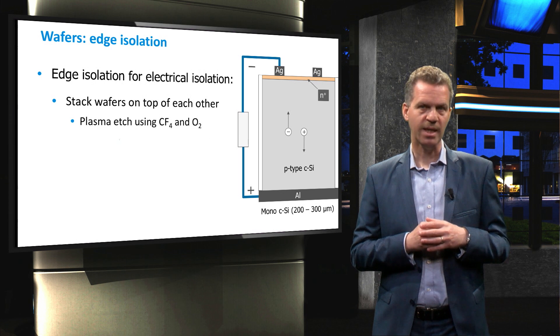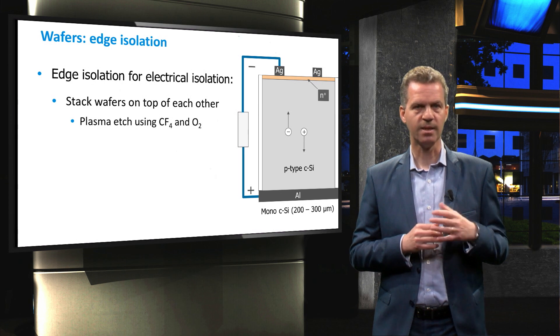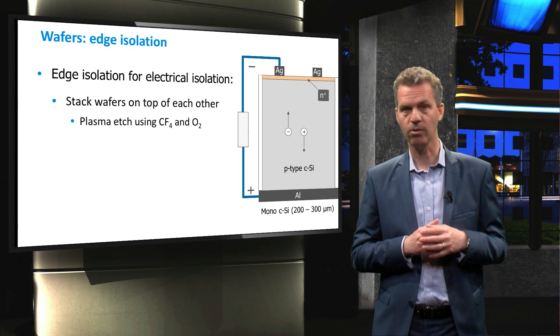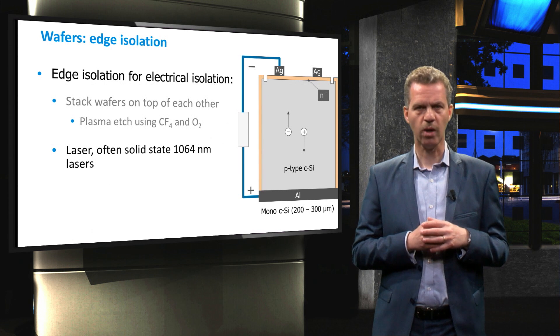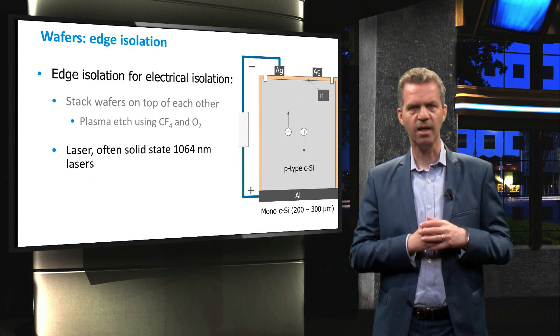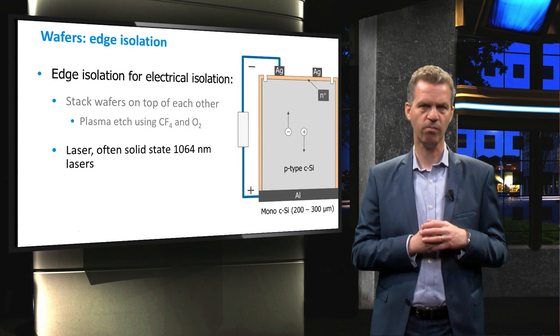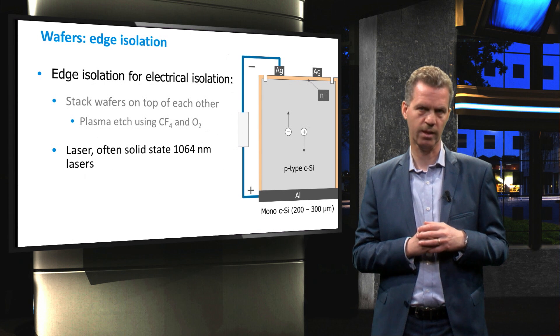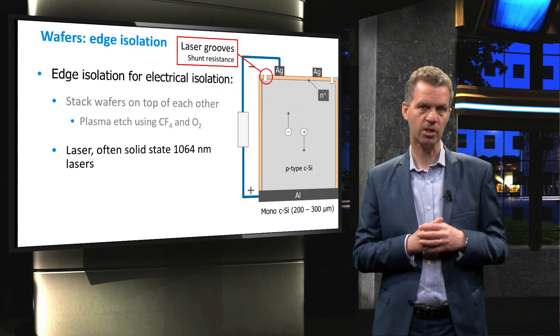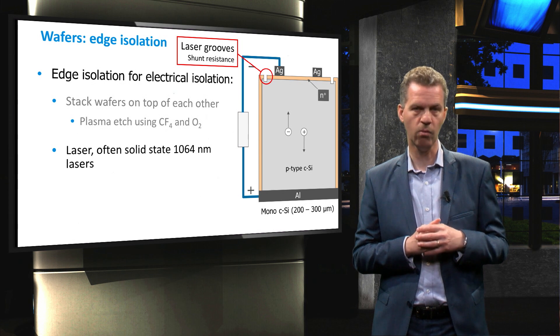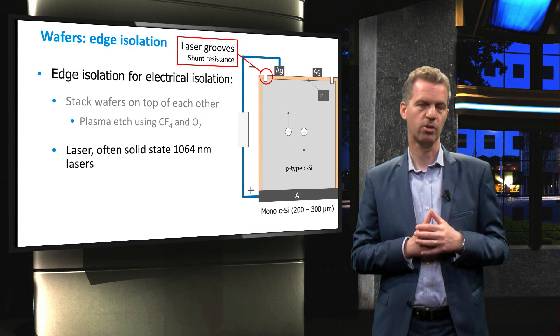Silicon is best etched by a plasma containing tetrafluoromethane and oxygen. The second method is to make a laser scribe close to the edge of the cell that interrupts the shunting path from the front contact to the back contact. The shunt resistance of the cell is hereby increased such that most of the current will flow through the external circuit.